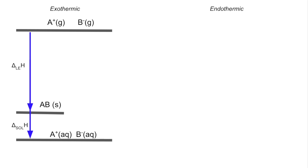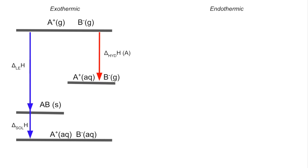Running down the other side, we need to turn those two gaseous ions into aqueous ions to complete the cycle. We do this one at a time: A⁺ gaseous to A⁺ aqueous is the hydration enthalpy for A — remember this is exothermic — and then B⁻ gaseous to B⁻ aqueous is the enthalpy change of hydration of B. That completes the cycle.